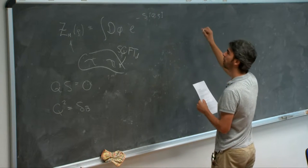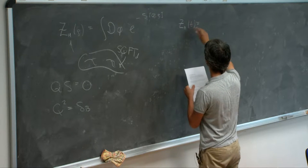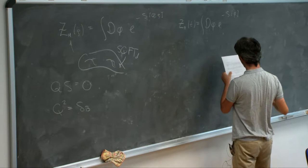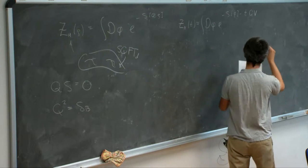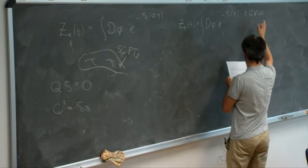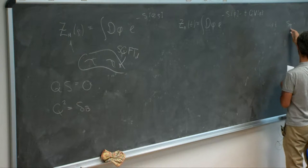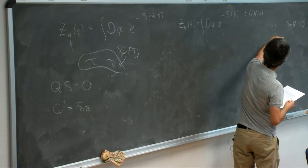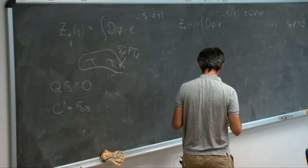We want to construct a one-parameter family of partition functions. Let me call this new parameter T. What we do is deform the action by something which is Q-exact — so it's the Q variation of some other functional that I call V, and we put a parameter T in front of it. T is a number but V is a functional of the fields. We choose this V such that the bosonic variation of V is zero. This assures us that this term is actually supersymmetric — if you apply Q to this, it is zero.